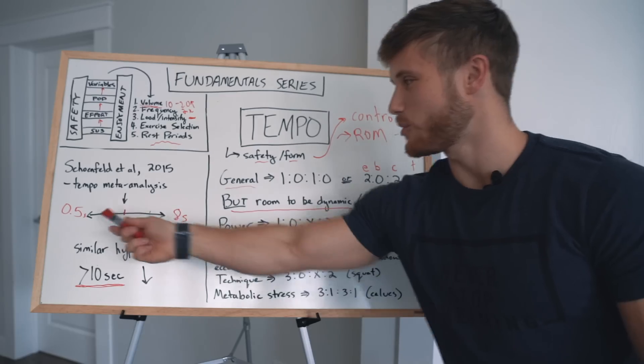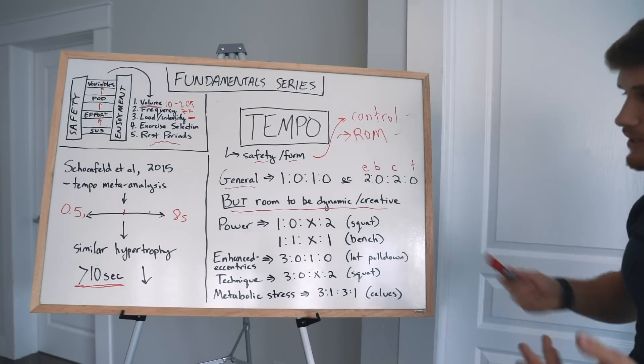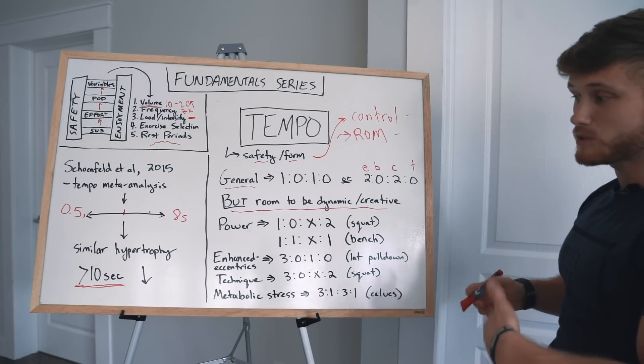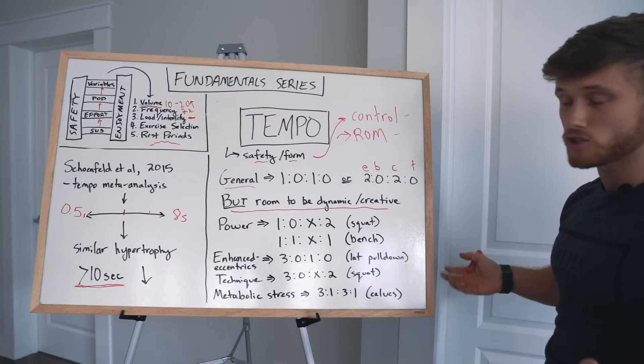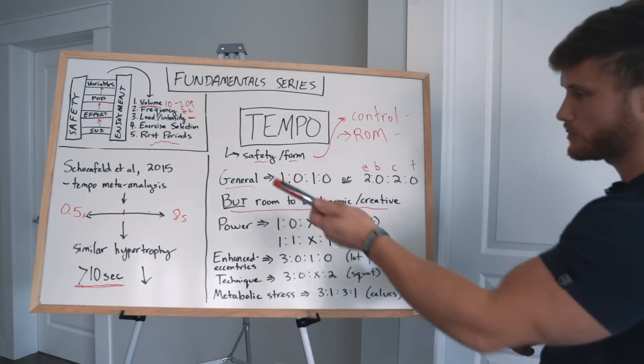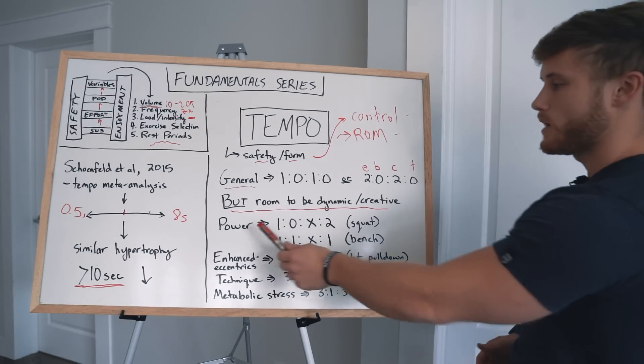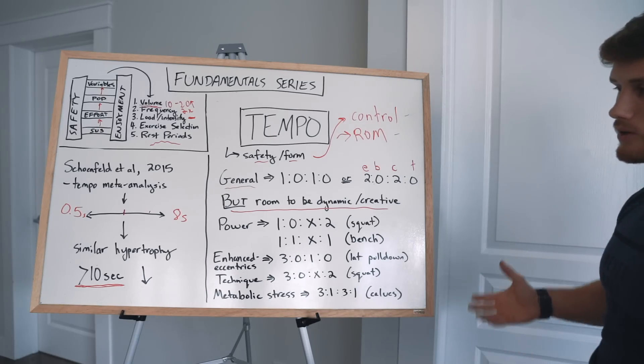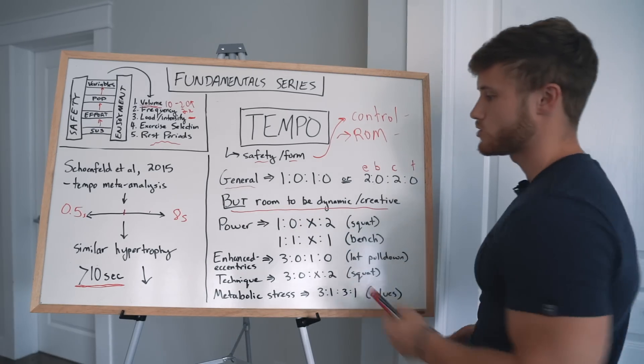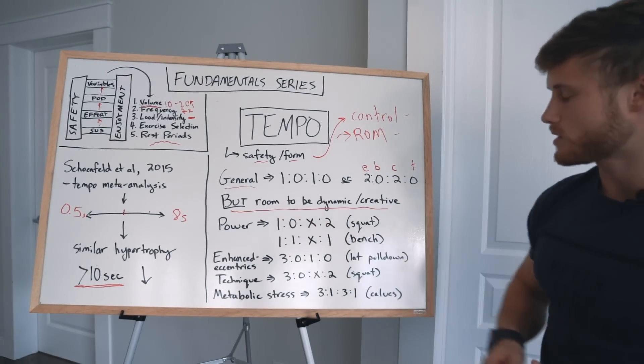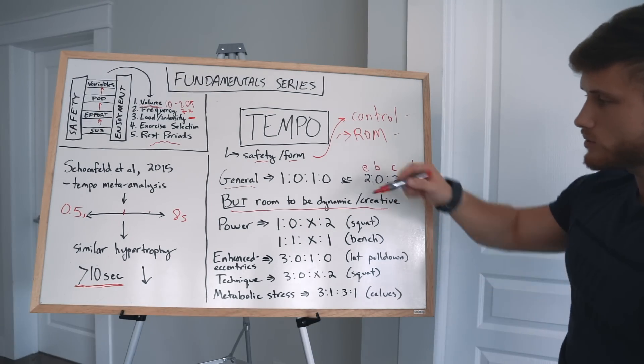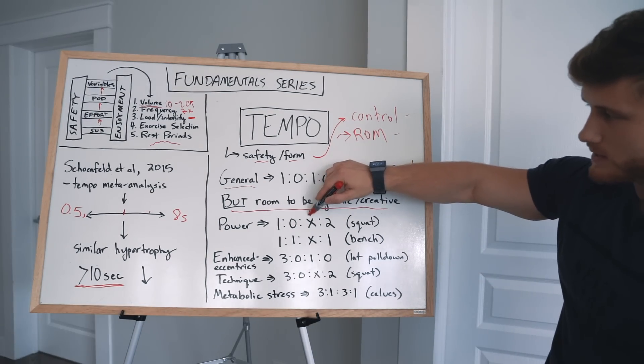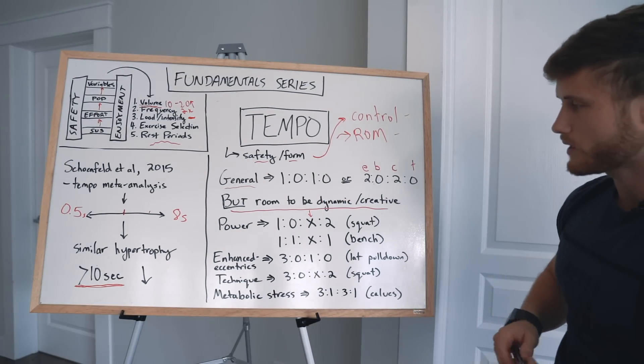Now, because we can see similar hypertrophy across a wide spectrum of different tempos, I think that depending on your specific goal or what you might be trying to train in that session, you can experiment with different types of tempo. So if you're trying to train power, which is explosive force, essentially, so if you're trying to get stronger, it's good to train for power on some movements.